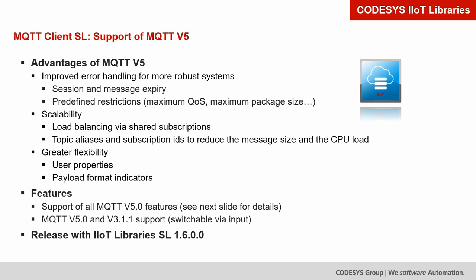The main advantages of MQTT version 5 include improved error handling for more robust systems, session and message expiry, and predefined restrictions like quality of service or maximum package size. MQTT becomes scalable by enabling load balancing via shared subscriptions. Topics and subscription IDs can be aliased to reduce message sizes and CPU load for encoding and decoding. Greater flexibility is enabled by allowing user properties and payload format indicators, which enable self-describing message payloads.